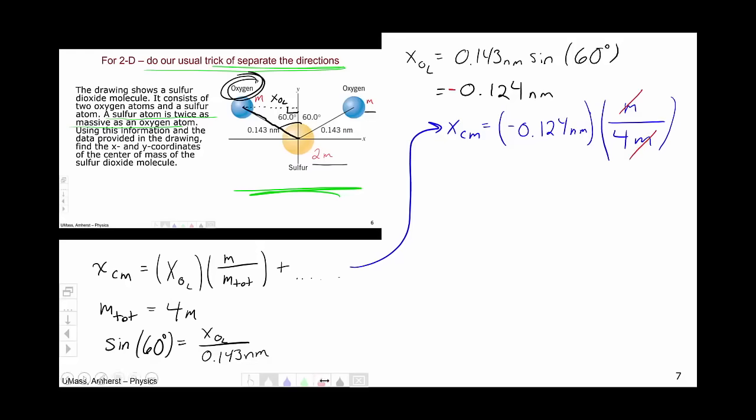We then move on to repeat this process with the sulfur atom. For the sulfur atom, the location of the atom is at x equals 0 nanometers because it's at the origin. The weight is 2m over the total 4m. And again, we see that the m's cancel.